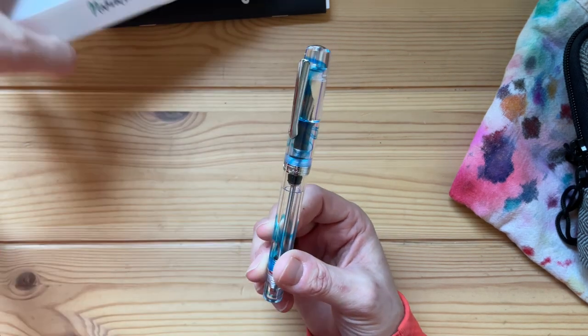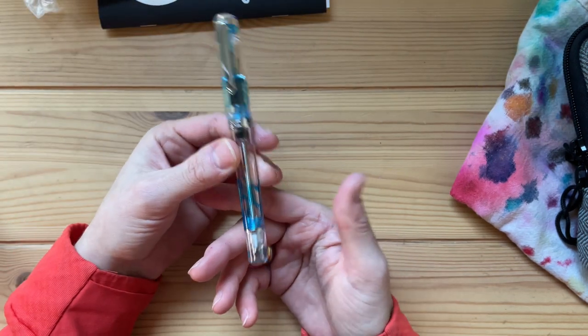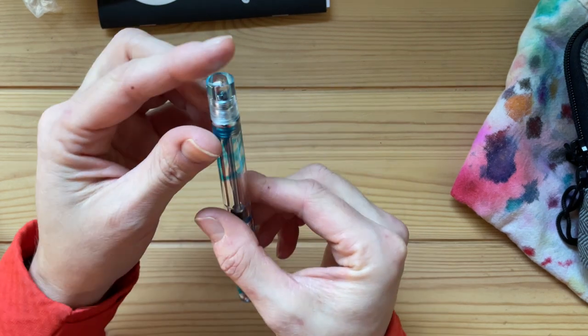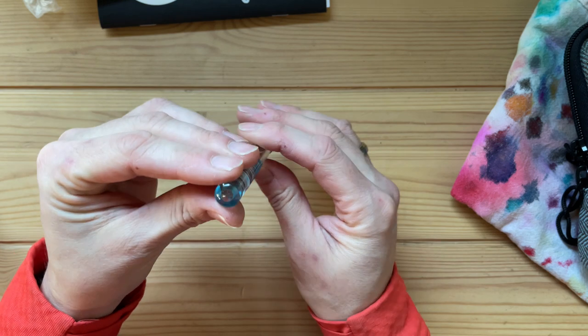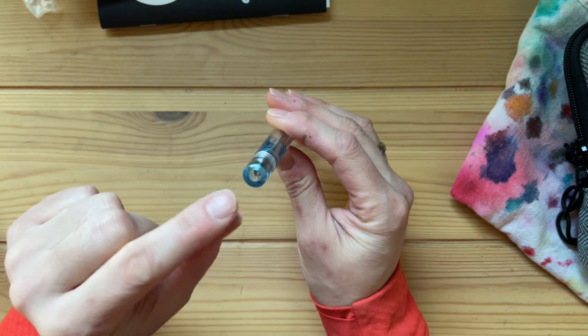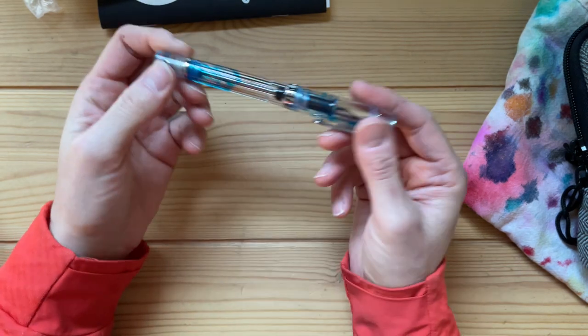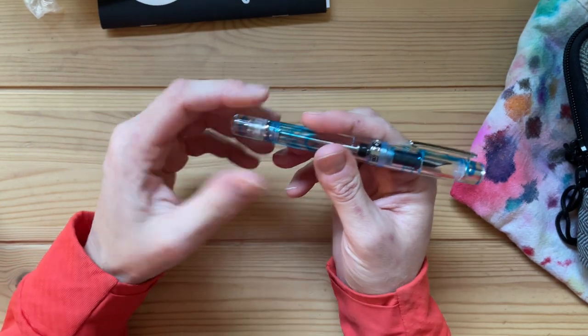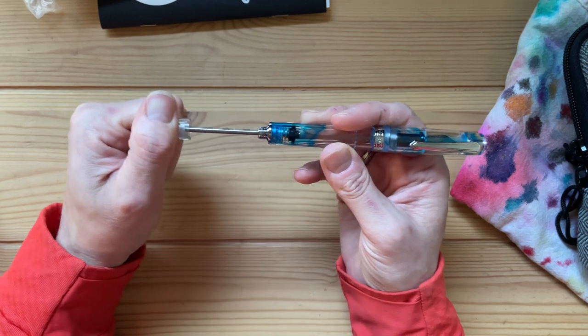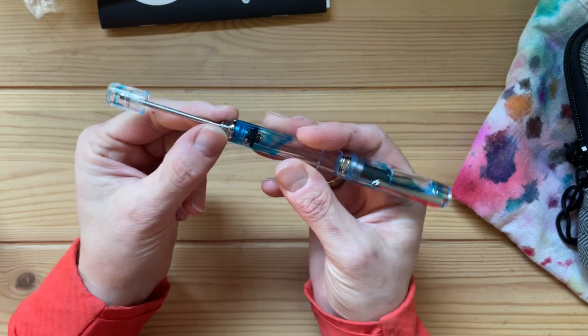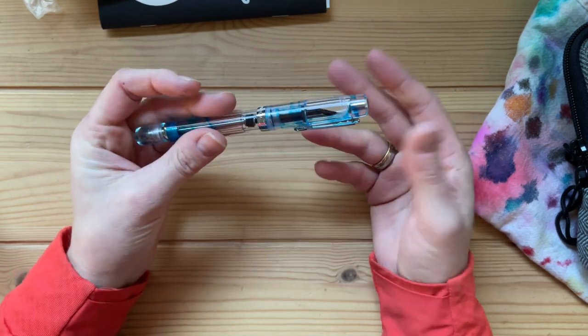The cap band says Narwhal still, even though the brand has rebranded to Navalure. On the back, this is a conical shape. I like that you can see this little knob here. There is some silver trim right here to seal the piston mechanism.